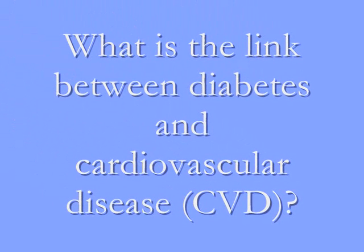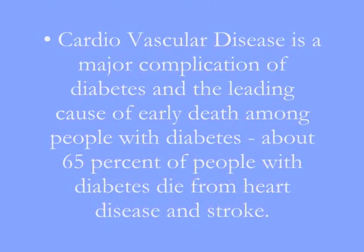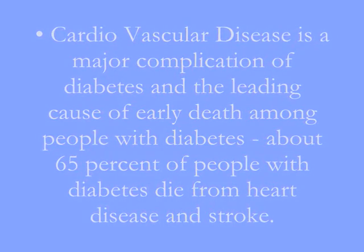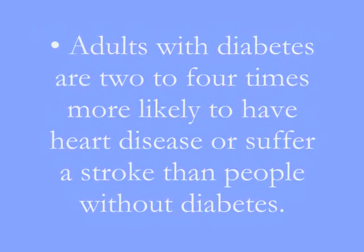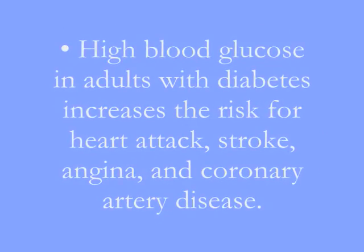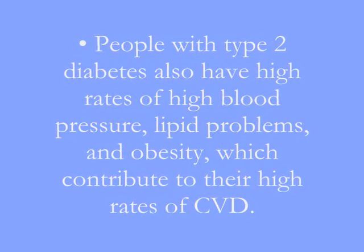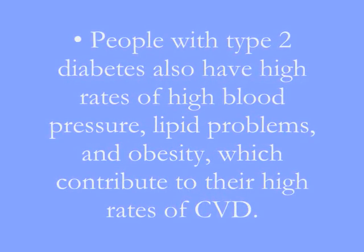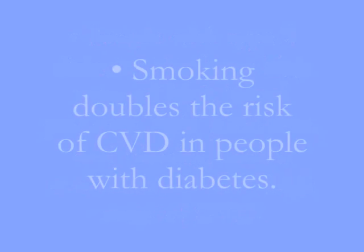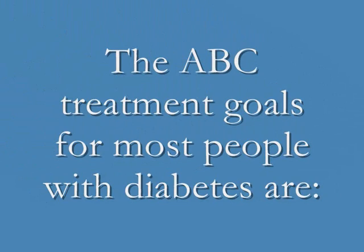What is the link between diabetes and cardiovascular disease? Cardiovascular disease is a major complication of diabetes and the leading cause of early death among diabetics. Adults with diabetes are two to four times more likely to have heart disease or suffer a stroke than people without diabetes. High blood glucose increases the risk for heart attack, stroke, angina, and coronary artery disease. People with type 2 diabetes also have other cardiac risk factors, and smoking doubles the cardiovascular disease risk in people with diabetes.